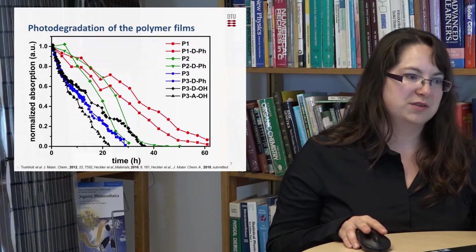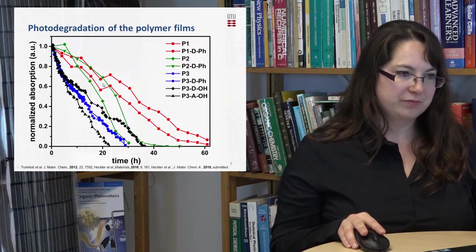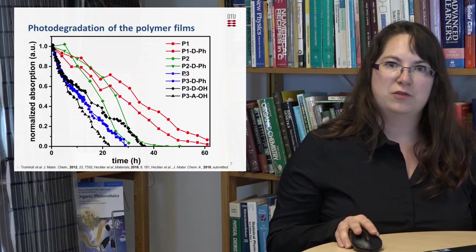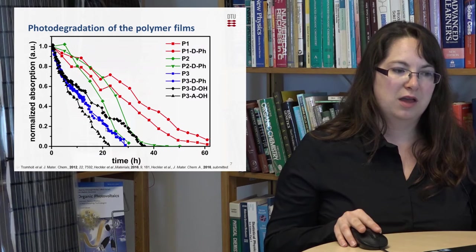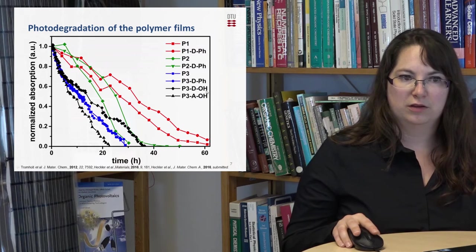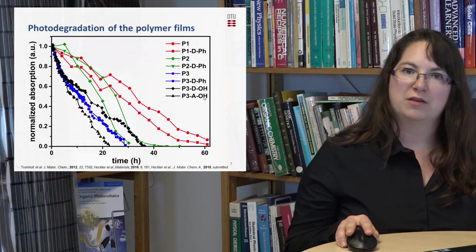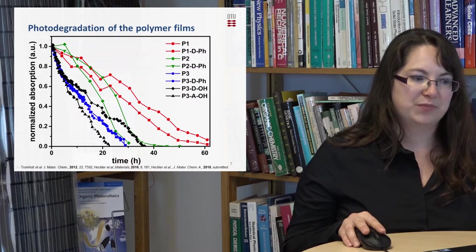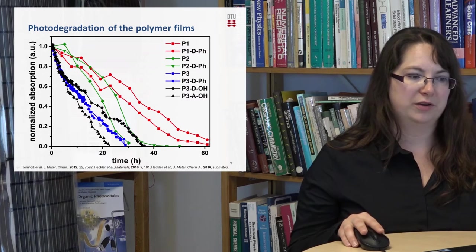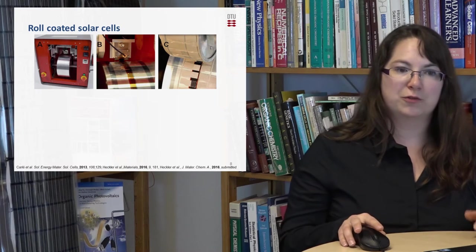While for P2 it's very similar, they seem a little bit different but the slope of the curves is very similar so they also perform very similar. When we look however at P3 then we can see that P3 and P3 D-Phenyl they are very similar but P3 D-OH so with an ethanol side chain on the donor part of the polymer there we can see an improvement while on the acceptor we can see that the stability is even worse than for the original polymer, which means that incorporating this group in this position is not so good.